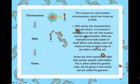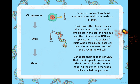The nucleus of a cell — in the middle, as you can see here — contains chromosomes, which are made up of DNA. You've heard about DNA a lot because it comes up in popular culture. DNA carries the characteristics that we inherit. It's located in two places in the cell: the nucleus and the mitochondria. DNA can replicate and make copies of itself, and when cells divide, each cell needs to have an exact copy of the DNA in the old cell. Someone described this as a little bit like the microchip of the cell — it has all the important information stored in it. That's a good way to think about it.